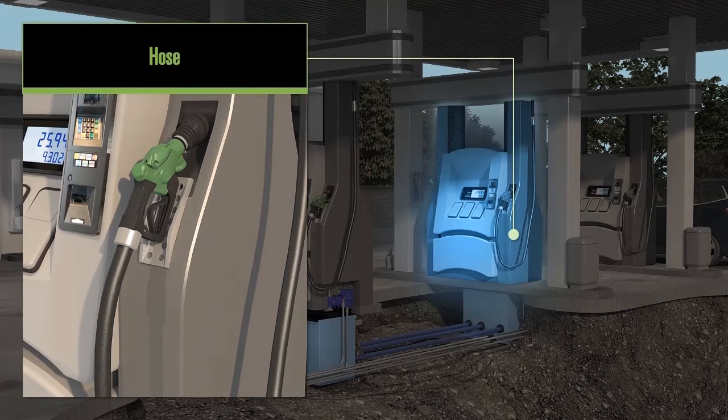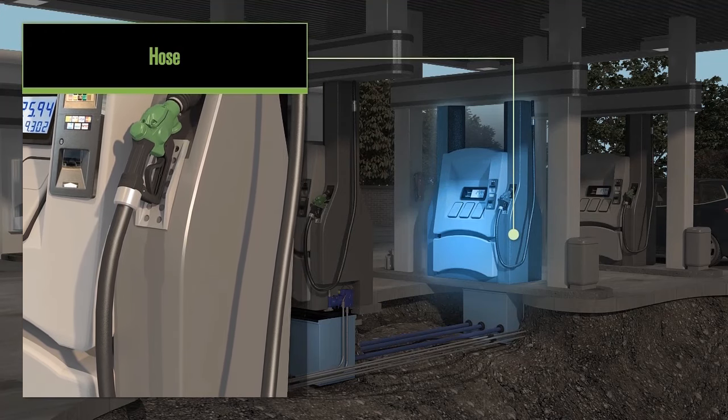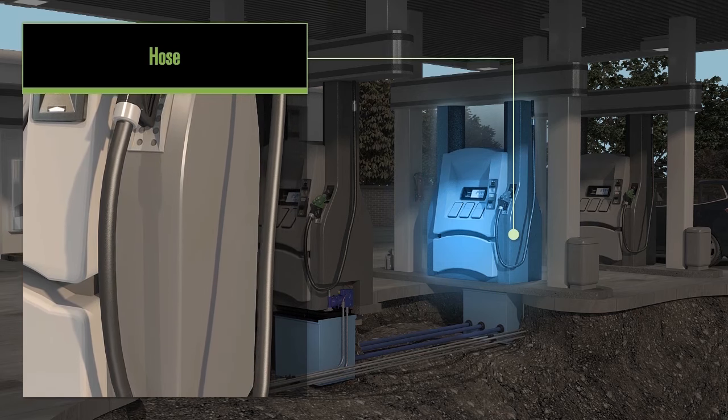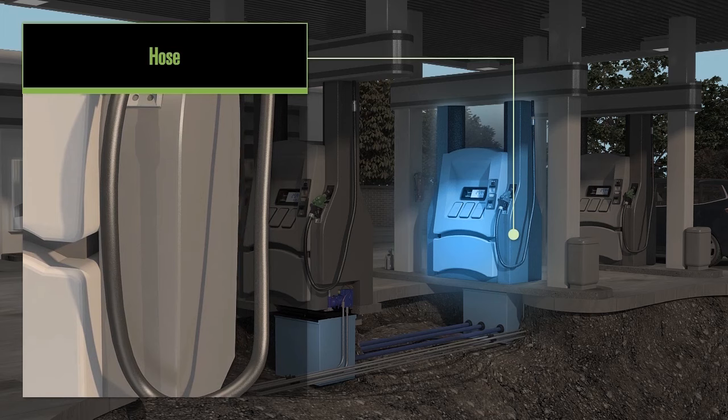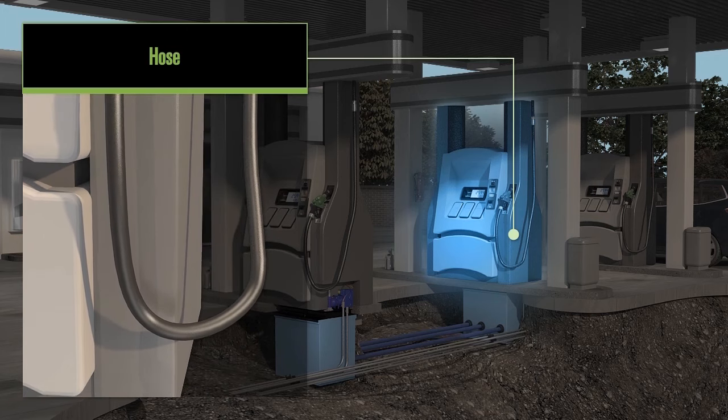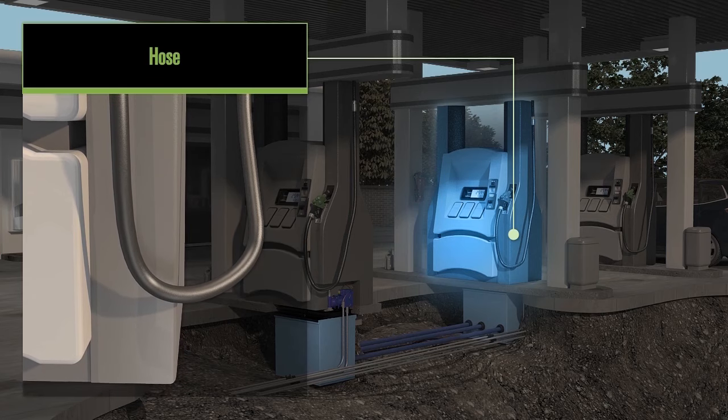Fuel hoses are made of synthetic rubber materials and may also contain a wire mesh for added structure to support fuel from the dispenser to the nozzle and into the customer's vehicle. Our hoses are made capable of withstanding varying environmental conditions, such as cold weather, marinas, and high levels of ethanol.